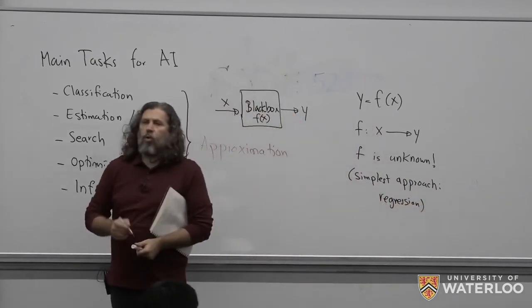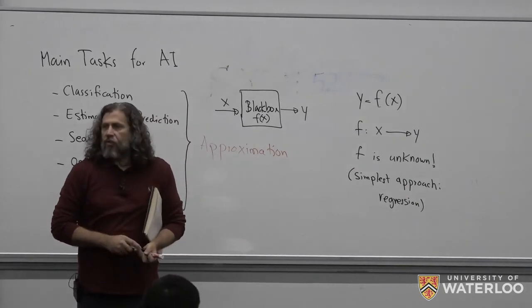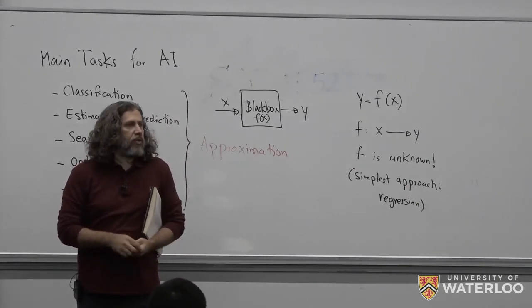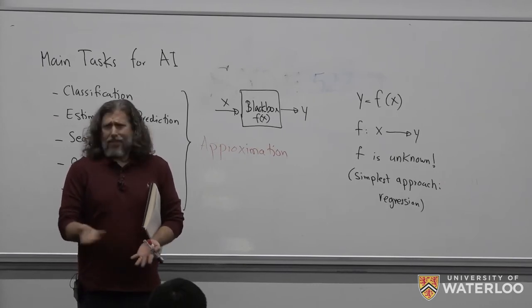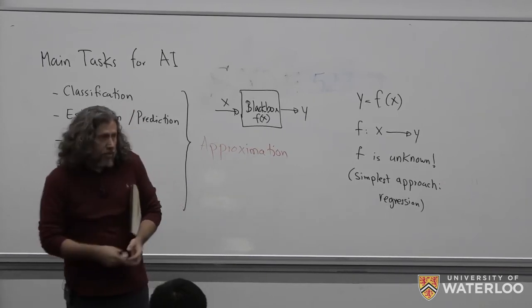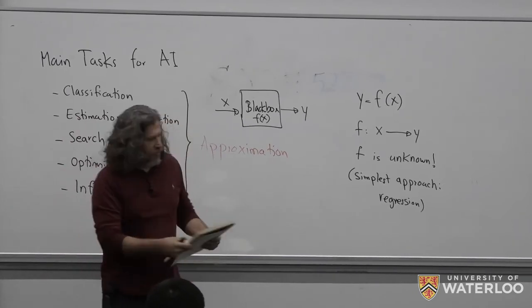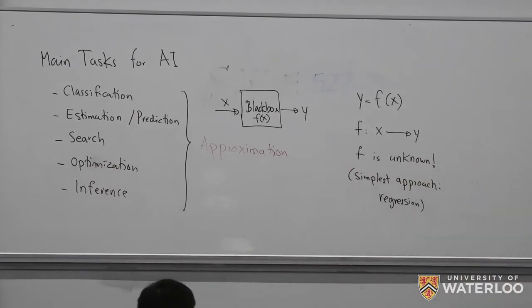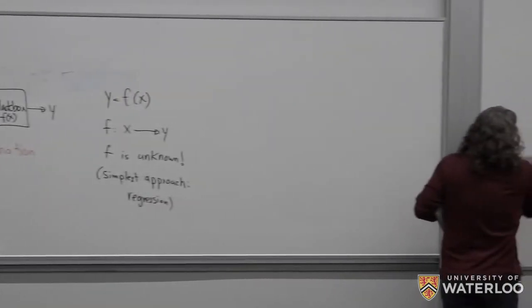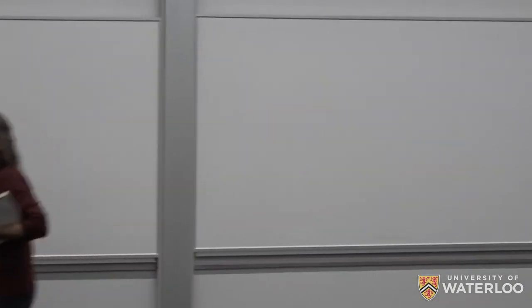If you told somebody 20 years ago that regression is an AI technique, they would say no, it's just a statistical method. Of course it is. But regression can do really nice stuff. I want to spend some time and see what is AI and what we understand under AI.